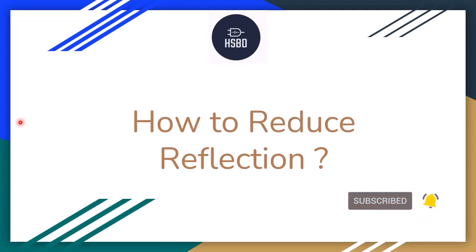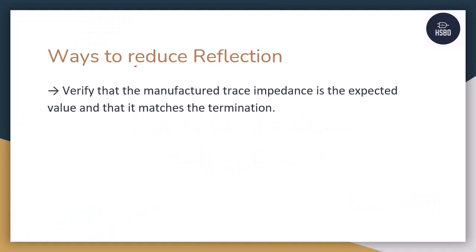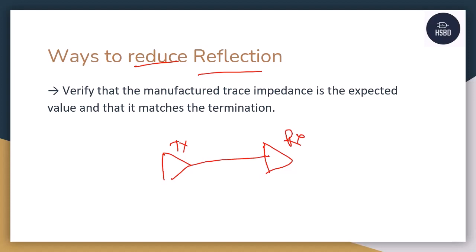There are multiple ways to reduce reflections in a transmission line. Whenever you have a transmitter as well as a receiver — we call them TX and RX — both are connected using a trace. In that trace, at the transmitter as well as at the receiver end, there are reflections, and you can also see reflections on the trace itself.